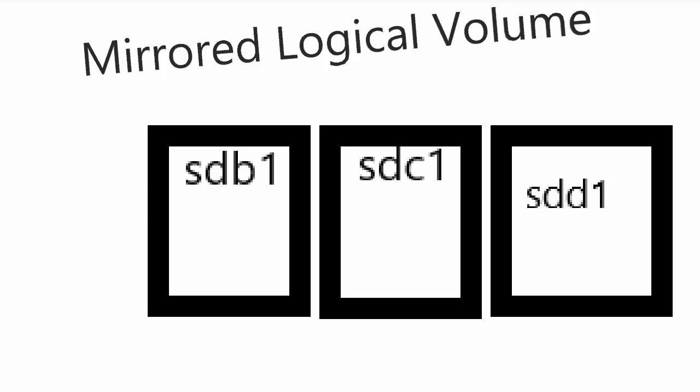So, you really only have just the capacity of one drive that's in that mirrored logical volume. Now, in a mirrored logical volume, you actually, you see there we have three drives as part of this, but we only have two drives which hold the data.